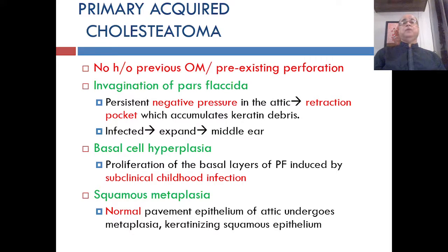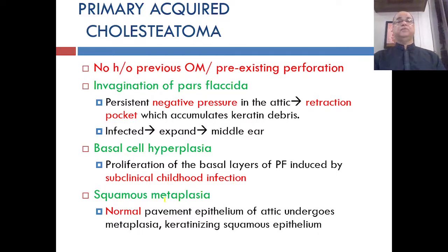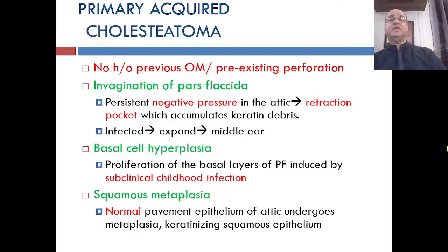Primary acquired cholesteatoma: there is no previous history of otitis media or pre-existing perforation; the tympanic membrane is intact. Invagination of the pars flaccida and persistent negative pressure in the attic region lead to a retraction pocket with keratin debris accumulation, ultimately infection, expansion, and perforation into the middle ear. Other mechanisms include basal cell hyperplasia of the pars flaccida from subclinical childhood infection, and squamous metaplasia where normal pavement epithelium of the attic converts to keratinizing squamous epithelium due to repeated infection.